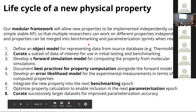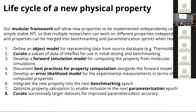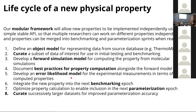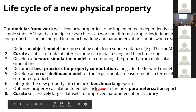When we come up with a new physical property to include, we first define an object model representing what the property measures and how to get it from a source database like ThermoML or BindingDB. We create data we think we might be interested in for benchmarking and later fitting. We develop a forward simulation model describing how to compute a property like density, enthalpy, or static dielectric constant from a molecular simulation, document best practices, and develop an error likelihood model. After integrating into the benchmarking epoch and optimizing, we can include it in parameterization.